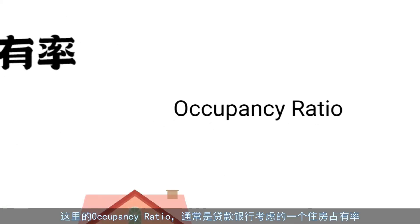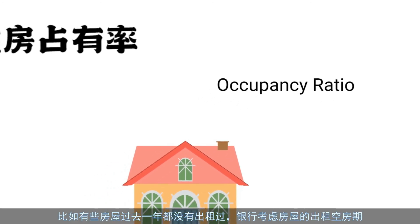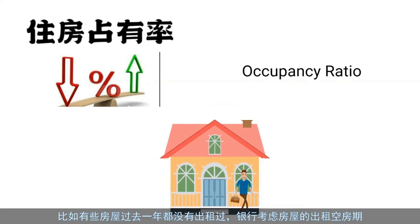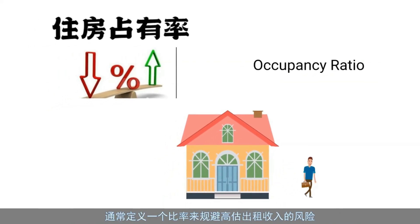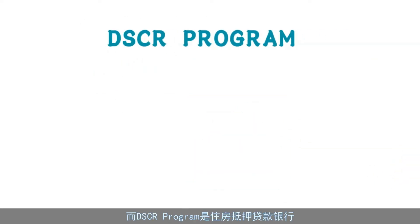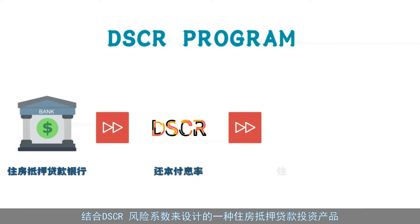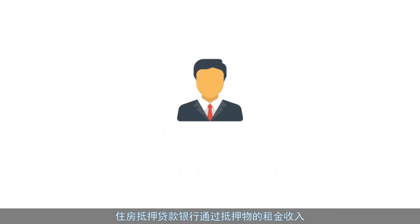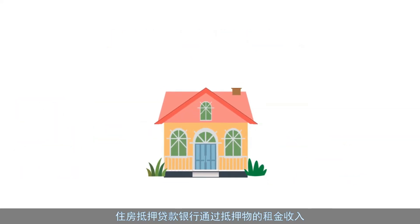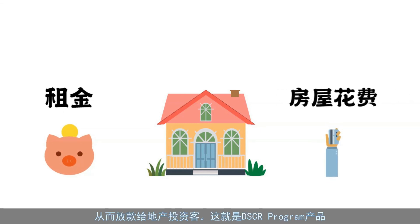Occupancy ratio is also considered by the mortgage bank. For example, some houses have not been rented in the past year, so the bank uses an occupancy factor — usually 75% — to avoid the risk of overestimating rental income. The DSCR program is a residential mortgage product designed around the DSCR risk factor, where the bank analyzes loan risk through the rental income and housing costs of the property to make loans to real estate investors.